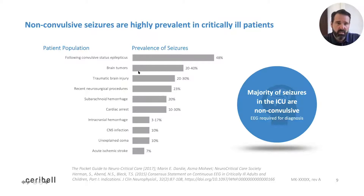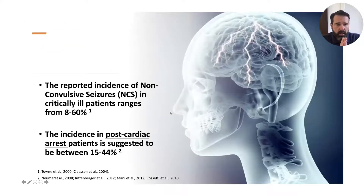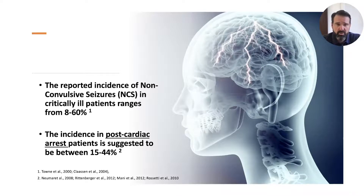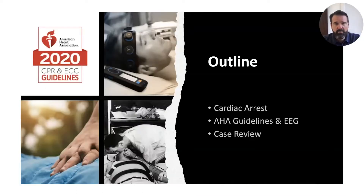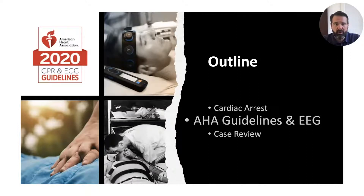The prevalence of seizures varies depending on the cause, including brain tumors, traumatic brain injury, subarachnoid hemorrhage, and cardiac arrest. The reported incidence of non-convulsive seizures in critically ill patients ranges between 60% and 80% depending on the literature. The incidence in post-cardiac arrest patients is suggested to be anywhere between 15% and 44% — a very high number. Because of that, the AHA guideline has come out and recommended that we perform EEGs frequently and often.